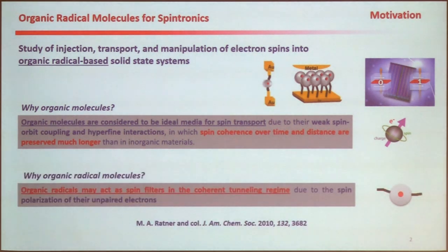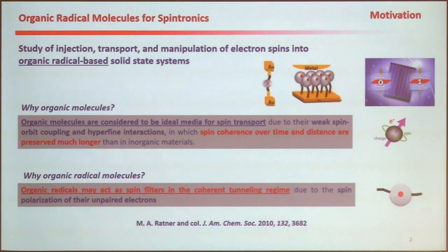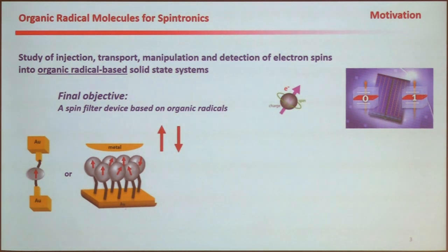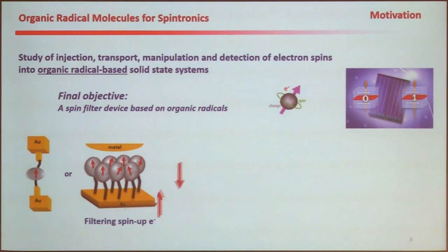And why radical molecules? Because there is a prediction that organic radicals may act as spin filters if they work in the coherent tunneling regime. For this reason, we want to use radicals, and our final objective is to use a solid device made with organic radicals — either a single molecule junction or junctions made with self-assembled monolayers — to make a spin filter.